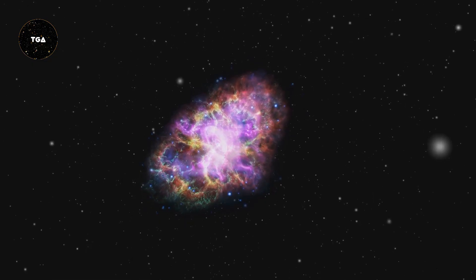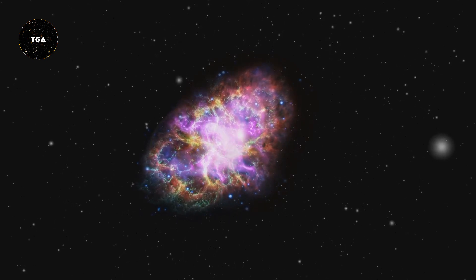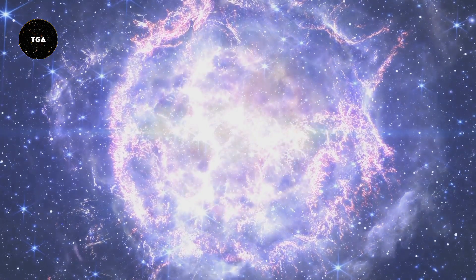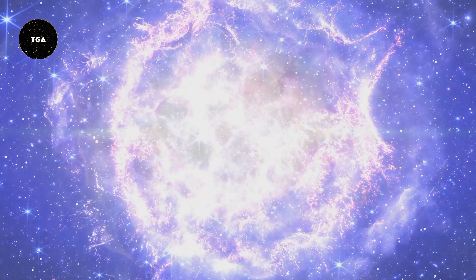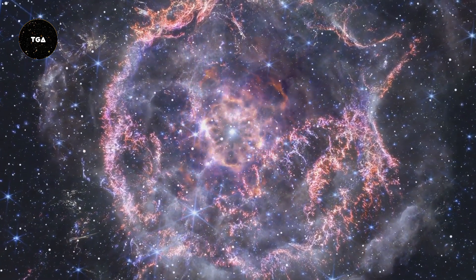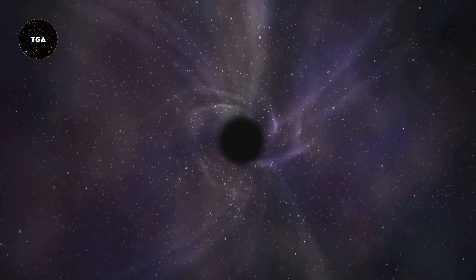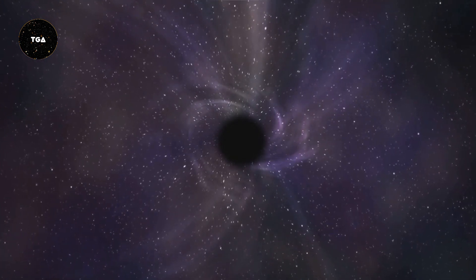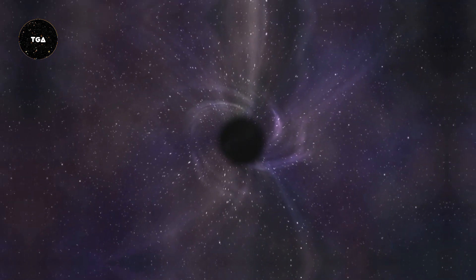The remnants of supernovae, known as supernova remnants, are fascinating objects. They include neutron stars and black holes. Neutron stars are incredibly dense, with a mass similar to the sun, but a diameter of only about 20 kilometers. Black holes, as we've discussed, are regions of space where gravity is so strong that nothing can escape.